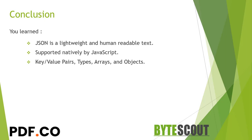JSON uses key-value pairs, arrays, and objects to represent data. One of the advantages of JSON is that it has types like numbers, strings, booleans, etc., which makes it very convenient and easy to use.